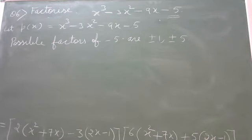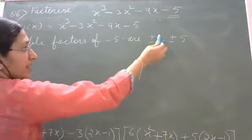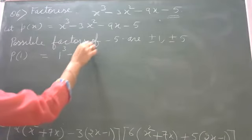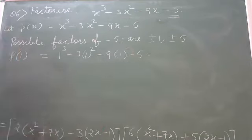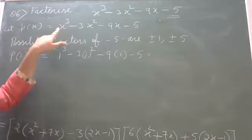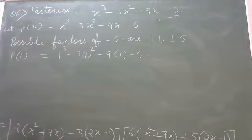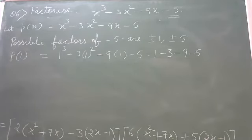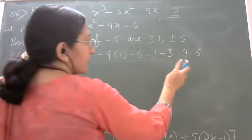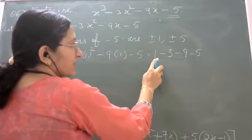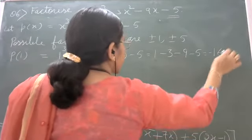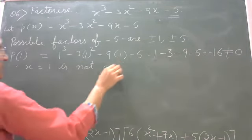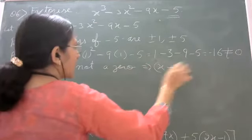Let px equals x cube minus 3x square minus 9x minus 5. We substitute possible values one by one. First, P(1) equals 1 cube minus 3 into 1 square minus 9 into 1 minus 5, which is 1 minus 3 minus 9 minus 5 equals minus 16, which is not equal to 0. So x equals 1 is not a zero, and x minus 1 is not a factor.